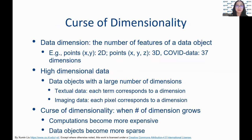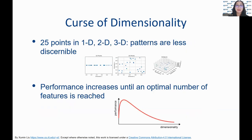The curse of dimensionality refers to the situation where the performance of a machine learning model significantly drops when the number of dimensions increases. With a high number of features, computation on those features will be more expensive and data objects become more sparse in a higher dimensional space. This example shows how the same group of data records are visualized in different dimensional spaces — they become more sparse when the dimension is higher.